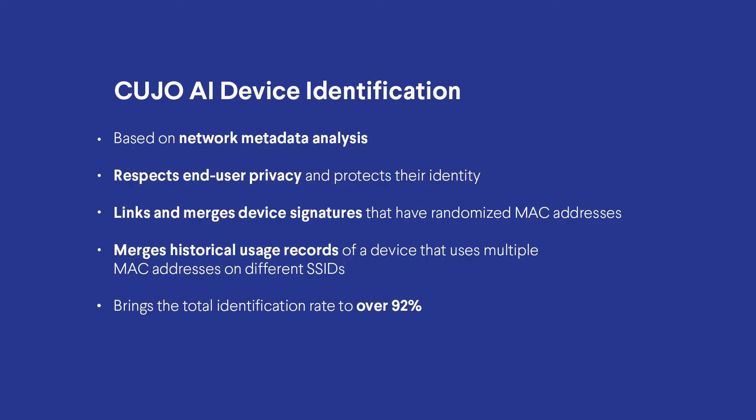It respects end user privacy and protects their identity. It links and merges device signatures that have randomized their MAC addresses. We merge historical user records of a device that uses multiple MAC addresses on different SSIDs. And we bring the total detection rate of MAC randomized devices all the way up to 92 percent. We are working on a second-phase solution by end of year that will further increase the detection rate and the speed of detection.